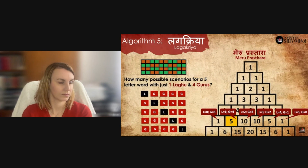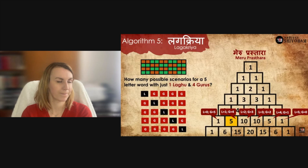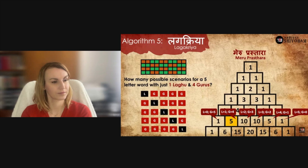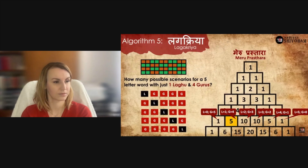Maharshi Pingalacharya designed Meru Prasthara for this specific purpose: let's say a rhythmic template enforces you to construct a five-letter word with one laghu and four gurus. What are the possible number of combinations? Today you have the nCr formula, but here we are talking about ancient algorithms. In Lagakriya, Meru Prasthara acts as a lookup table — go to row number five, count from left: the first box is zero laghus and five gurus; the second box is one laghu and four gurus, which equals five. So there are five possible combinations.